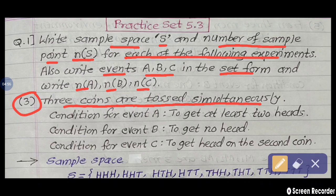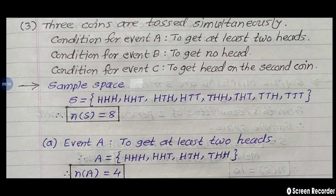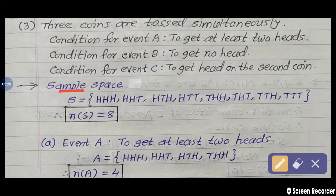Three conditions are given: Event A is to get at least two heads. Event B is to get no head. Event C is to get head on the second coin. First, we are writing the sample space. What is given here? Three coins are tossed simultaneously.